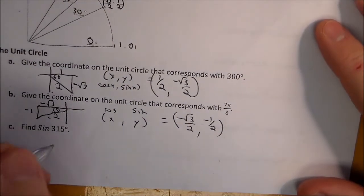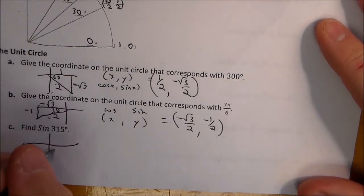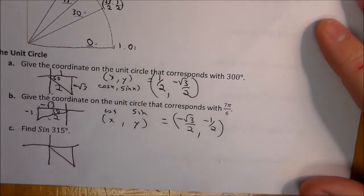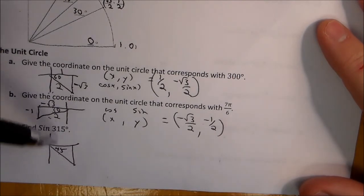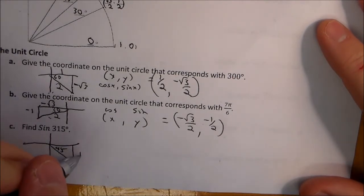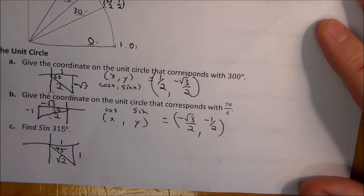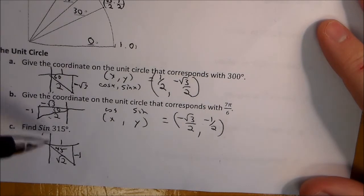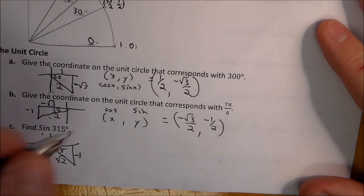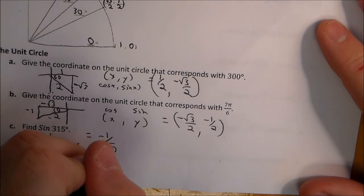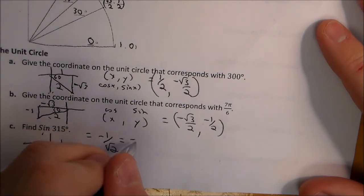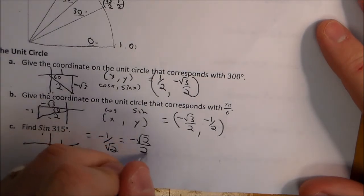For sine of 315 degrees: 315 is in quadrant four with a 45 degree reference angle, because 45 degrees short of 360 gets us to 315. For 45-45-90, the sides are 1, 1, and root 2, with the y-value negative. Sine is opposite over hypotenuse, so that's negative 1 over root 2, which we rationalize to negative root 2 over 2.